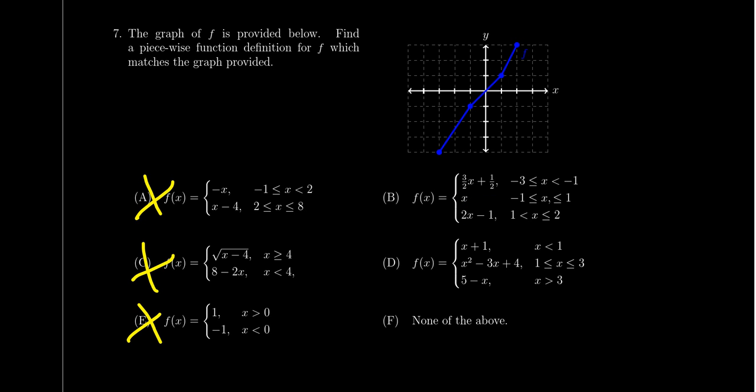Option D also has three pieces, so those are my contenders right now. When you look at option D, though, you have x plus 1, which is a line. You have x minus 5, which is a line. But the third piece, x squared minus 3x plus 4, that's going to be the graph of a parabola. We don't have any curvature on our graph right here, so it can't be option D.